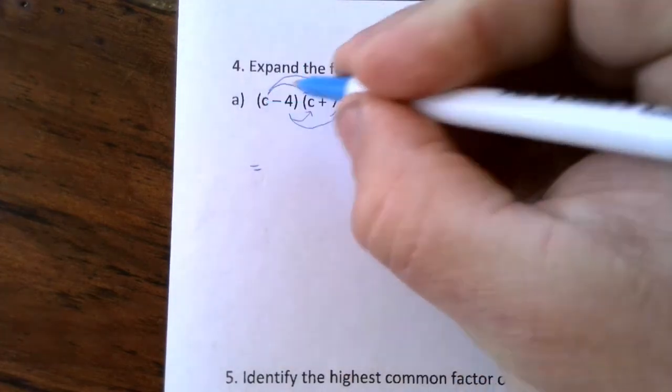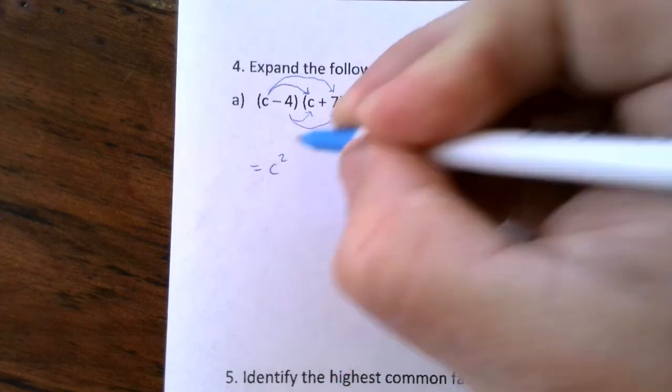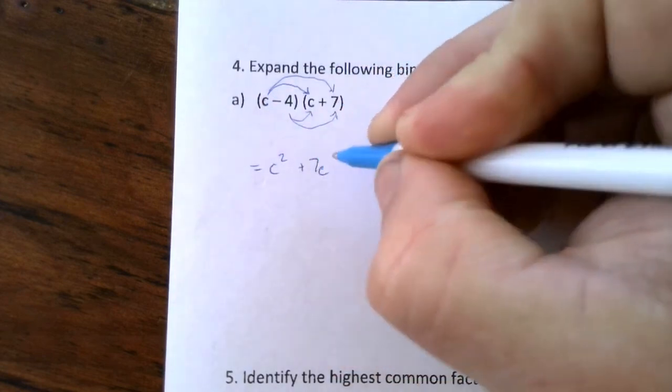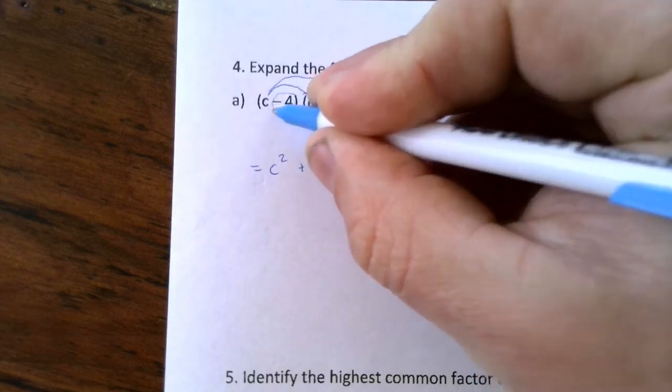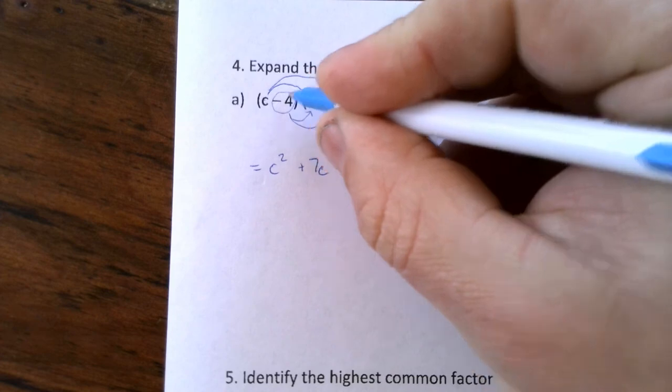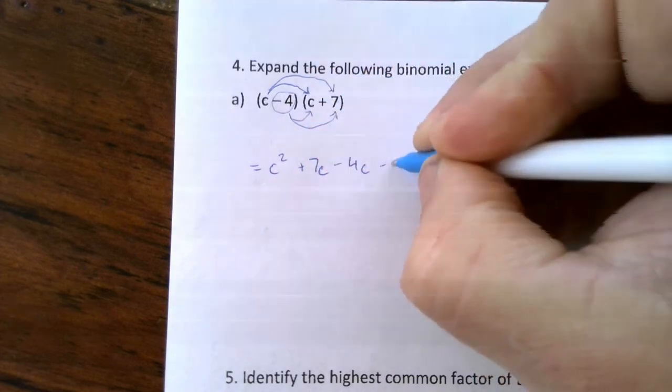So we've got c times c makes c squared. c times 7 makes 7c. Minus 4 times c makes minus 4c. Minus 4 times 7 makes minus 28.